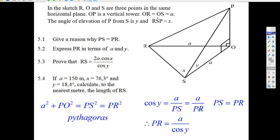Well, if that's true, then you can multiply both sides by PR and divide by cos Y, and we have PR in terms of A and Y, A divided by cos Y.